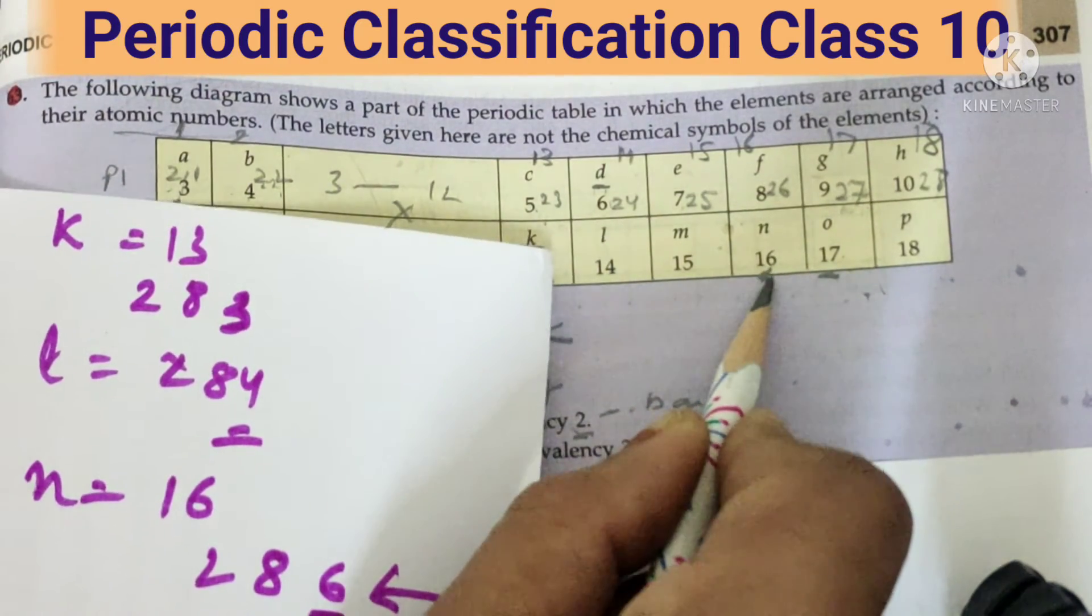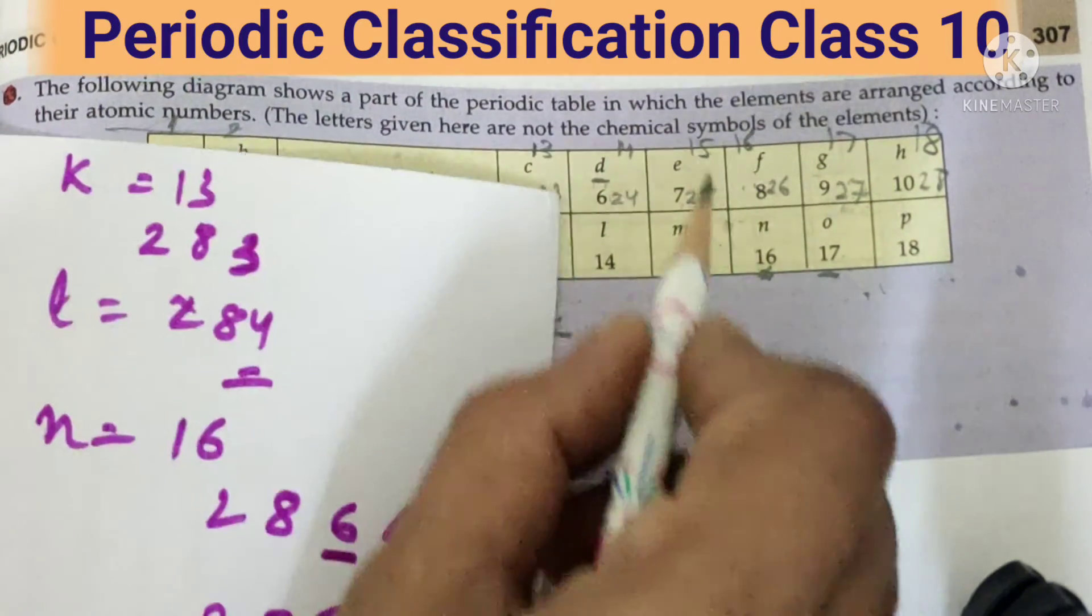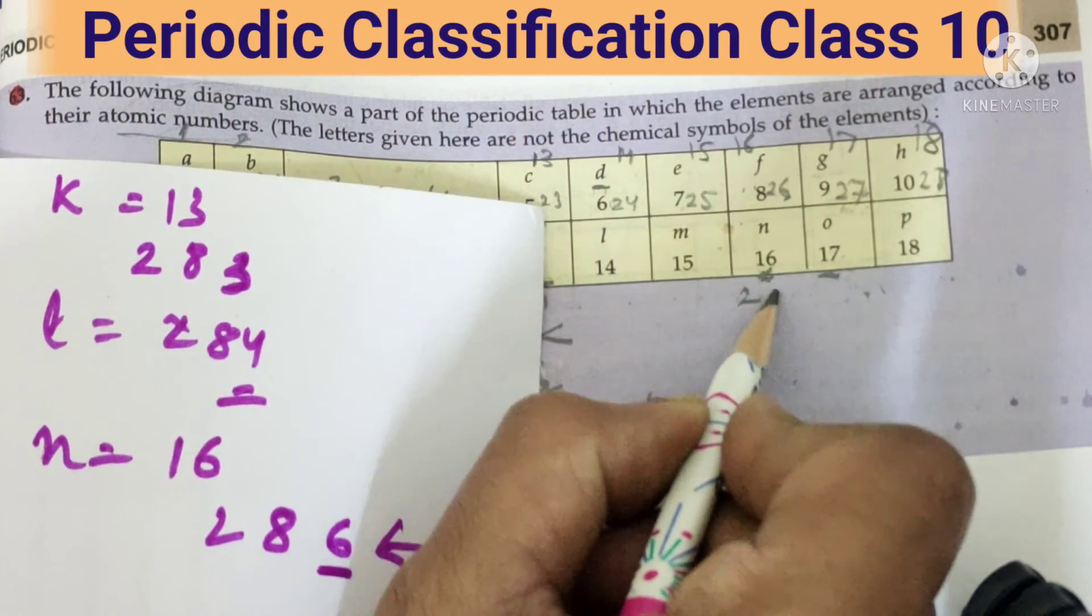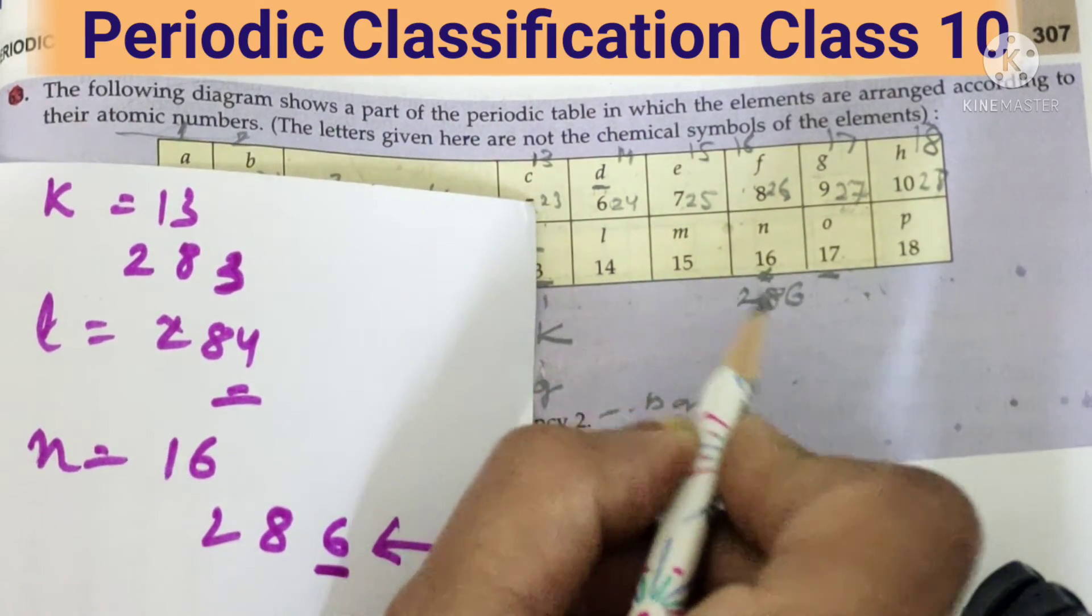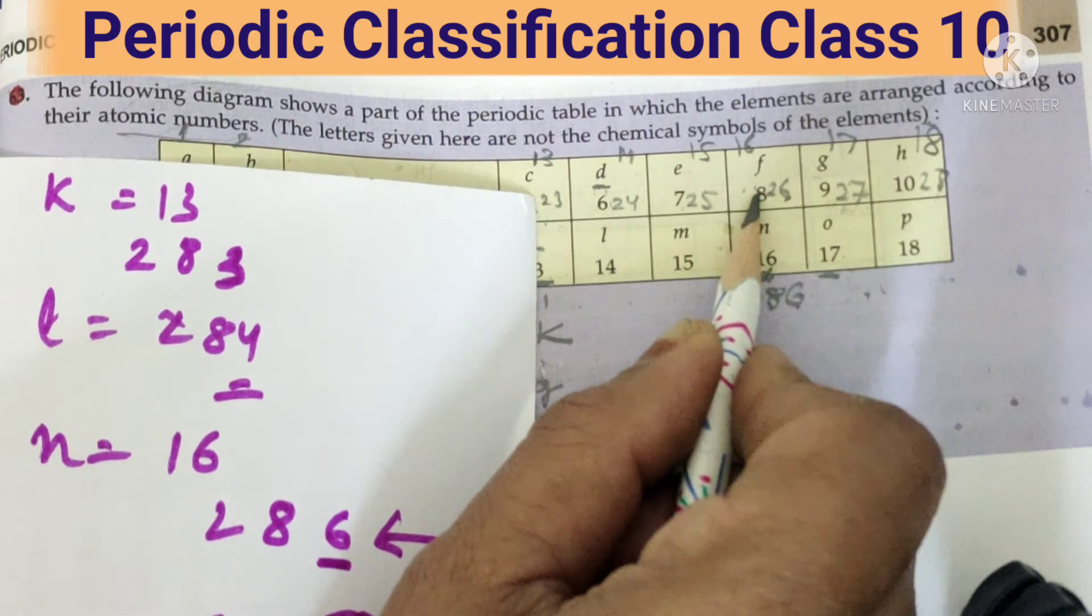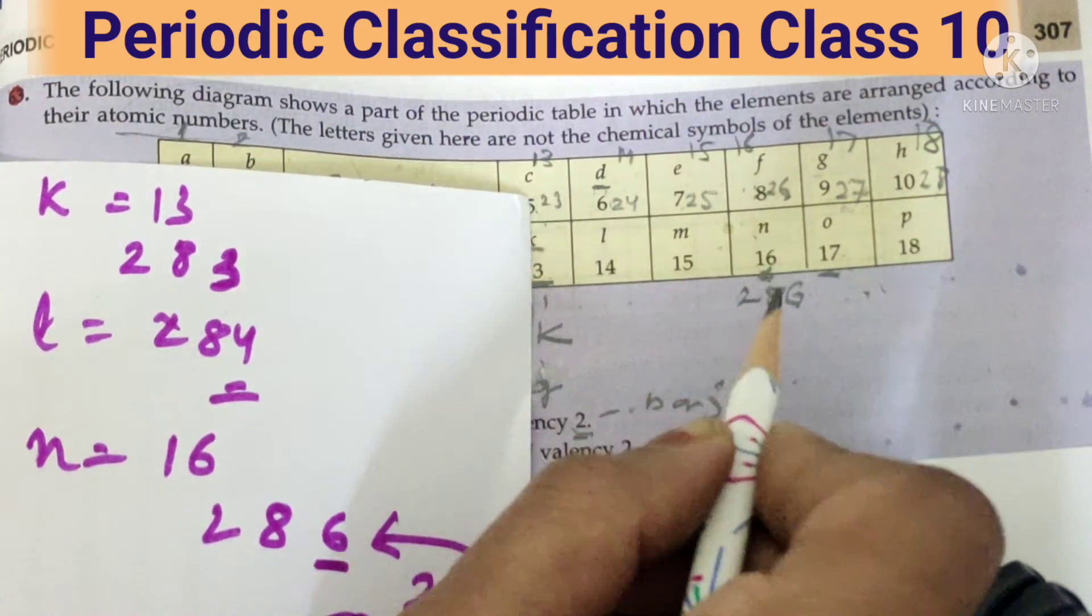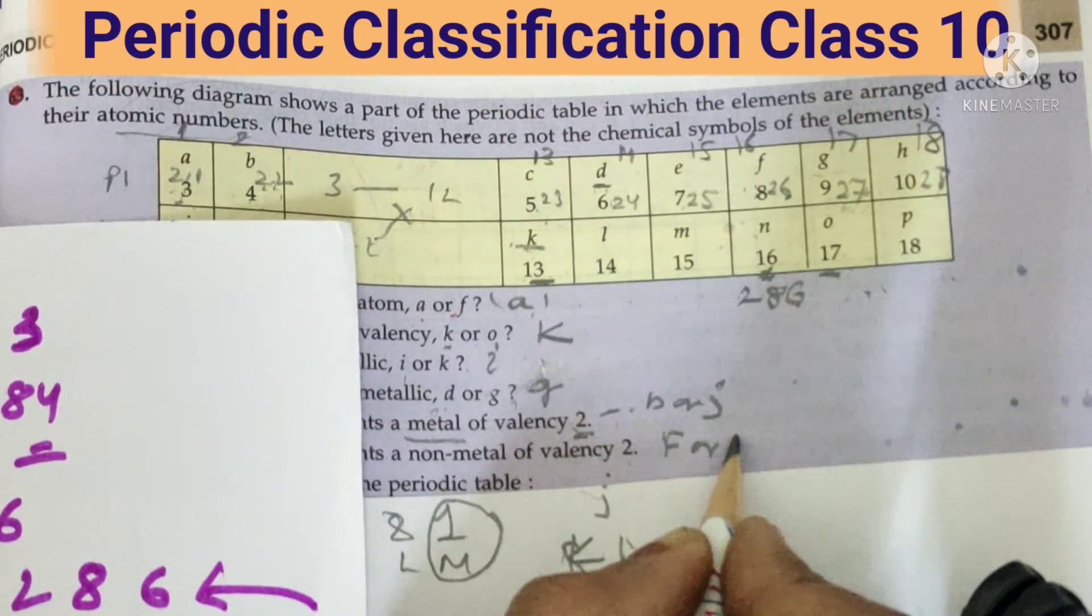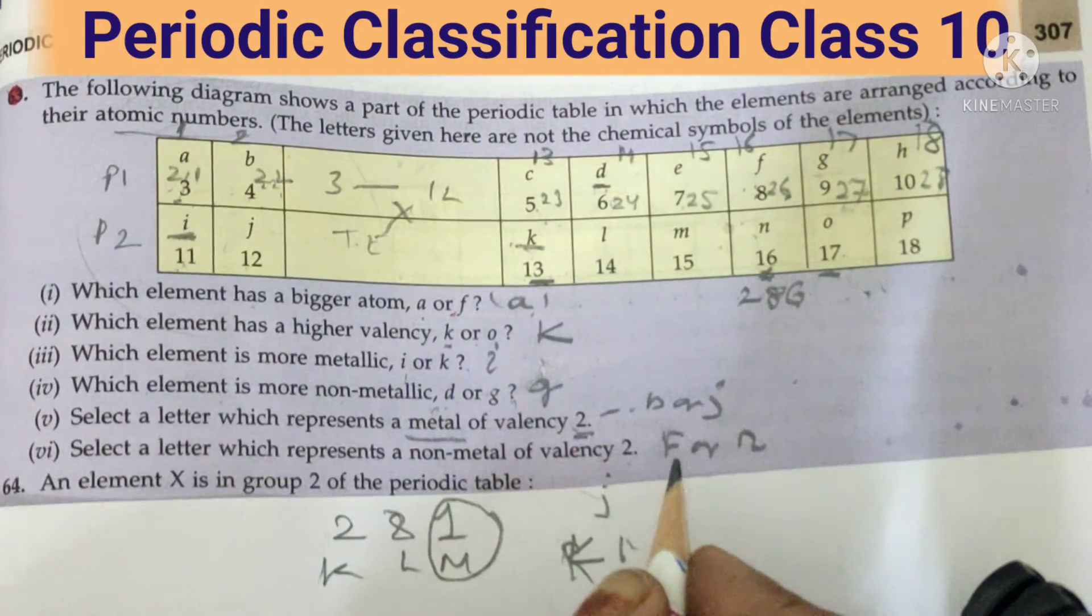But in this group, both accept two. See, upper is also six, and lower also see, two eight six. That means this can also accept two, this will also accept two. So answer will be F or N.